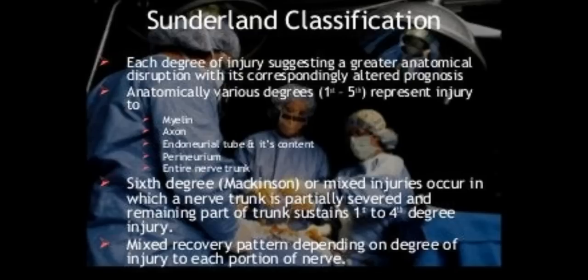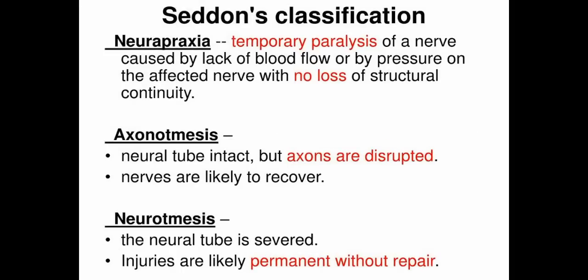Anatomically, the degrees involve: myelin, axon, endoneurium, perineurium, endoneurium, and the entire nerve trunk. The sixth degree is the McKinnon or mixed injuries, in which a nerve trunk is partially severed and the remaining part of the trunk is sustained.